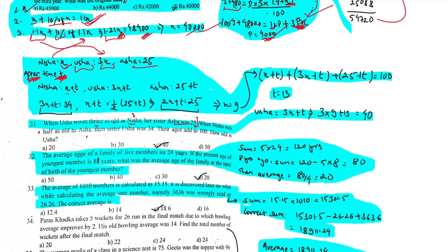Setting up variables: Nisha is x plus t, Usa is 3x plus t, Asha is 25 plus t. At a certain point in time, all ages shift by t years. The second line of information: Nisha was half as old as Asha, and sister Asha (Usha) was 34.